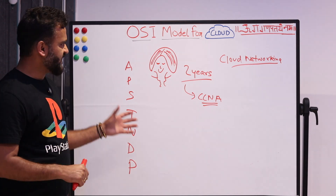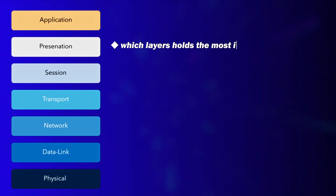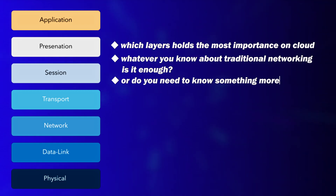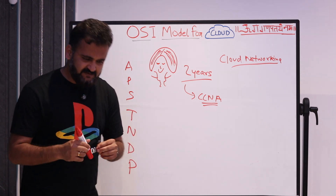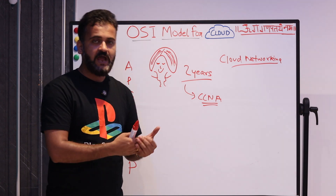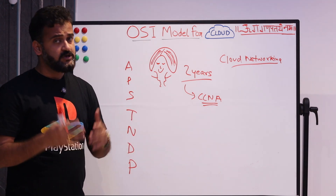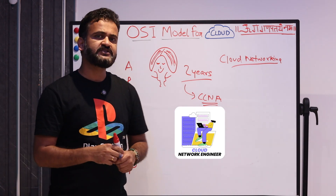The interviewer then asked a follow-up question: how would Rhea apply her OSI knowledge on cloud? Which layers hold the most importance in cloud, and is traditional networking knowledge enough or does she need to know more? That's when Rhea got nervous — she wasn't expecting this question. This video breaks down exactly that: what OSI knowledge is required in 2025 for cloud roles, what to keep, what to skip, and what new things to add.